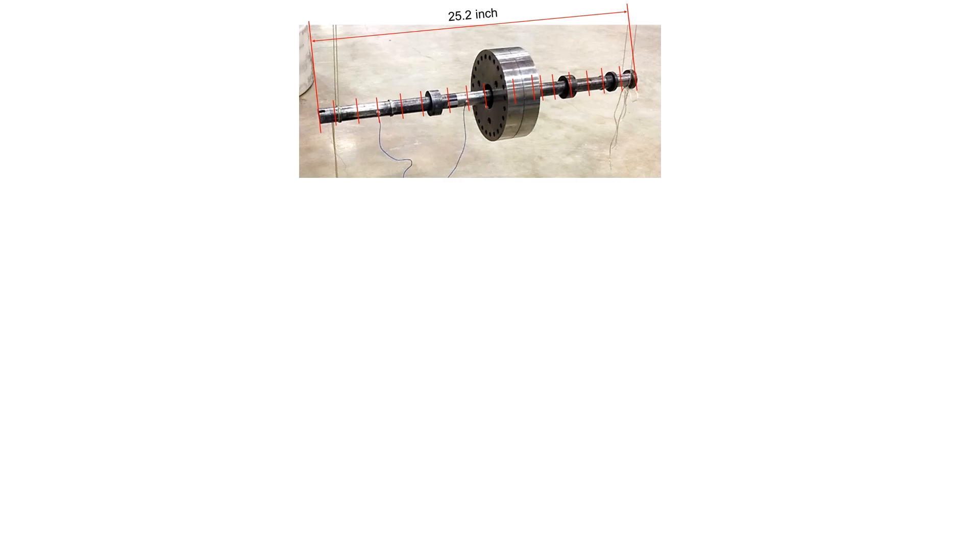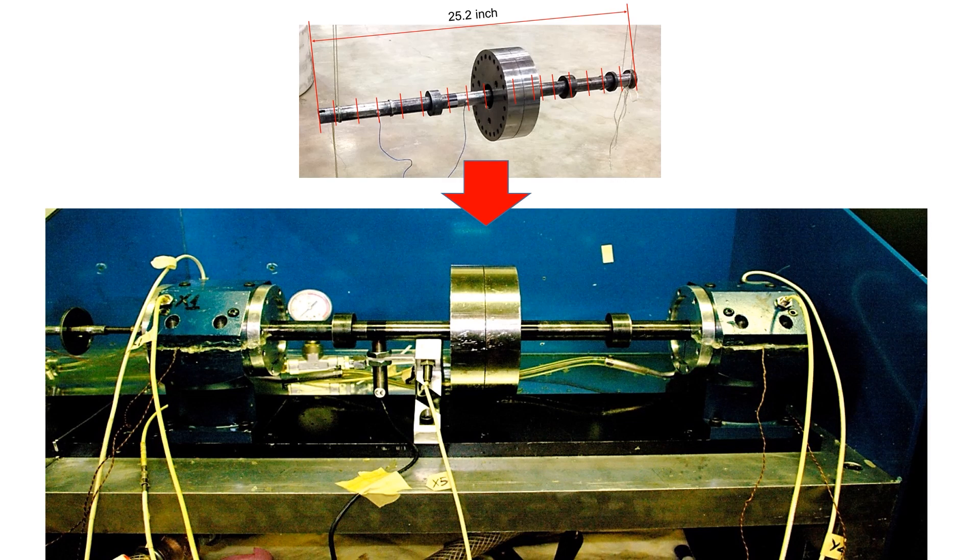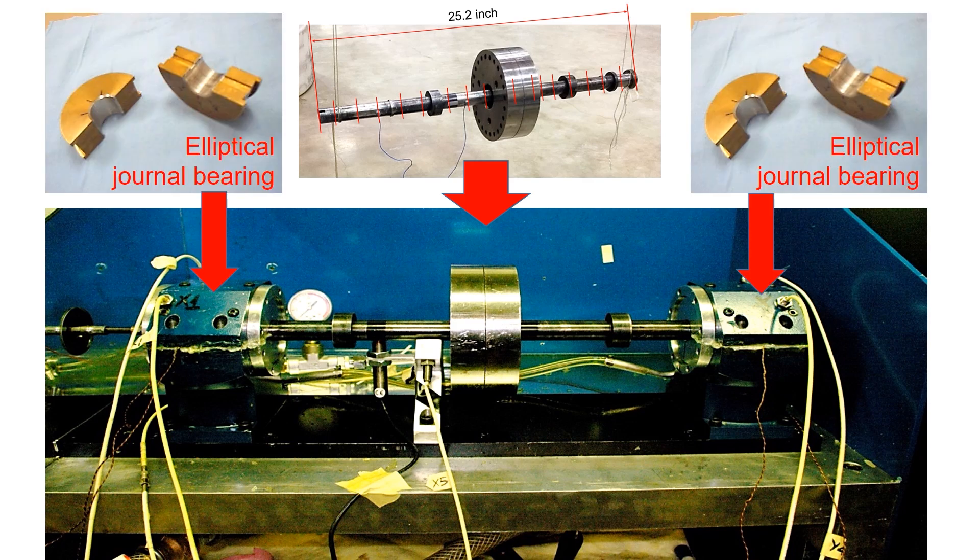I'll give you an example here. Say this rotor is installed in a test bench, with elliptical journal bearings installed at each end. If you know the detailed geometry of the bearing, you could predict the stiffness and damping characteristics.